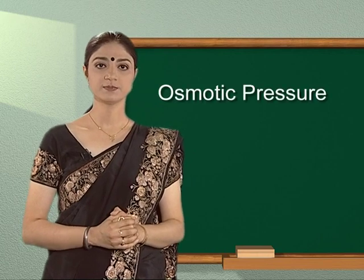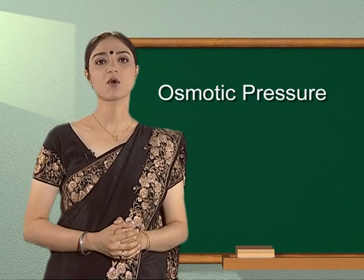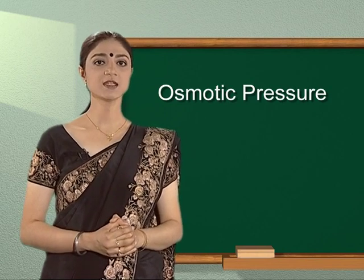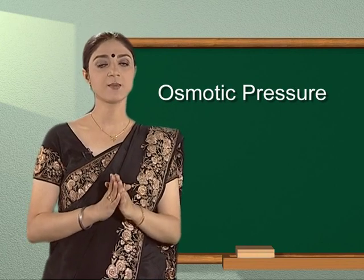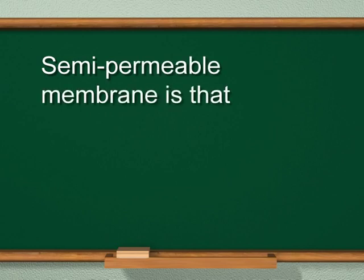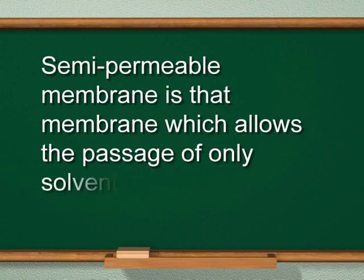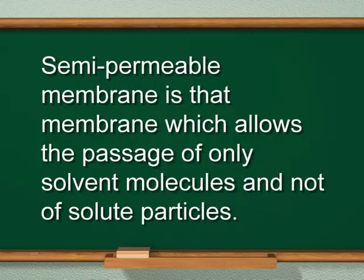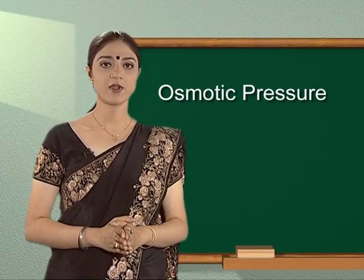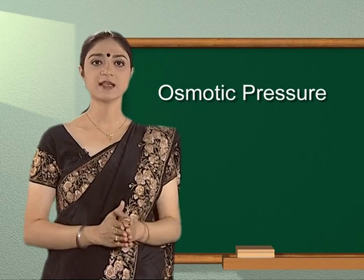Let us discuss one more colligative property: osmotic pressure. Before starting our discussion, it is important to know about semi-permeable membranes. A semi-permeable membrane is a membrane which allows the passage of only solvent molecules and not of solute particles. Such membranes are present in vegetables as well as in animals.